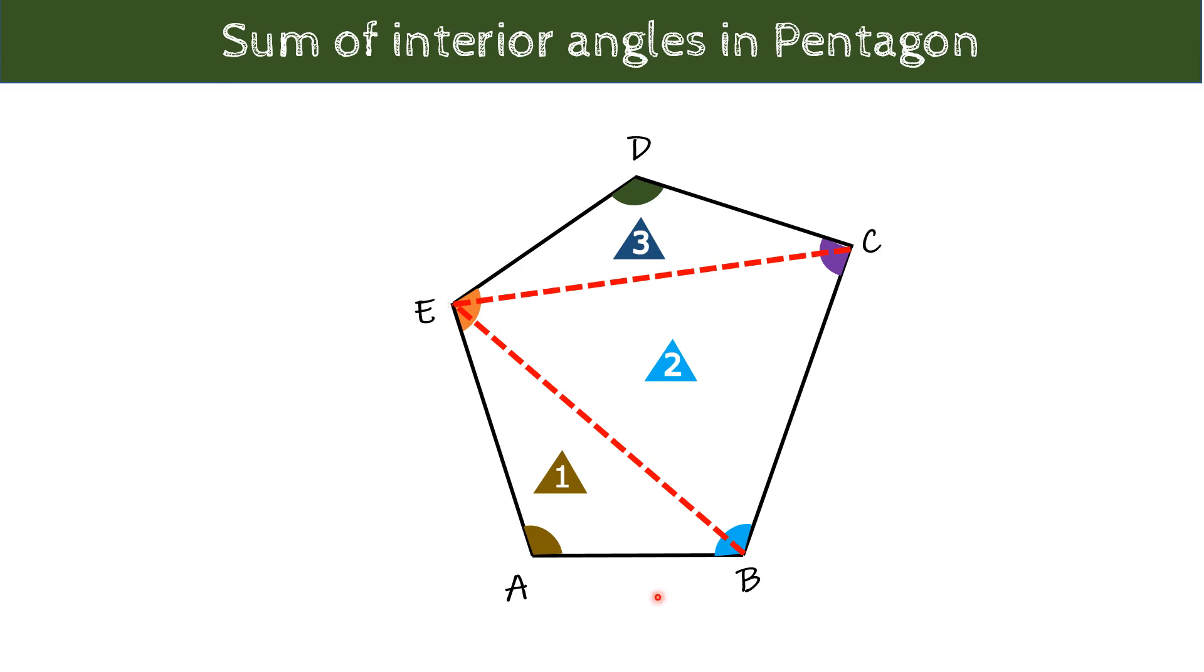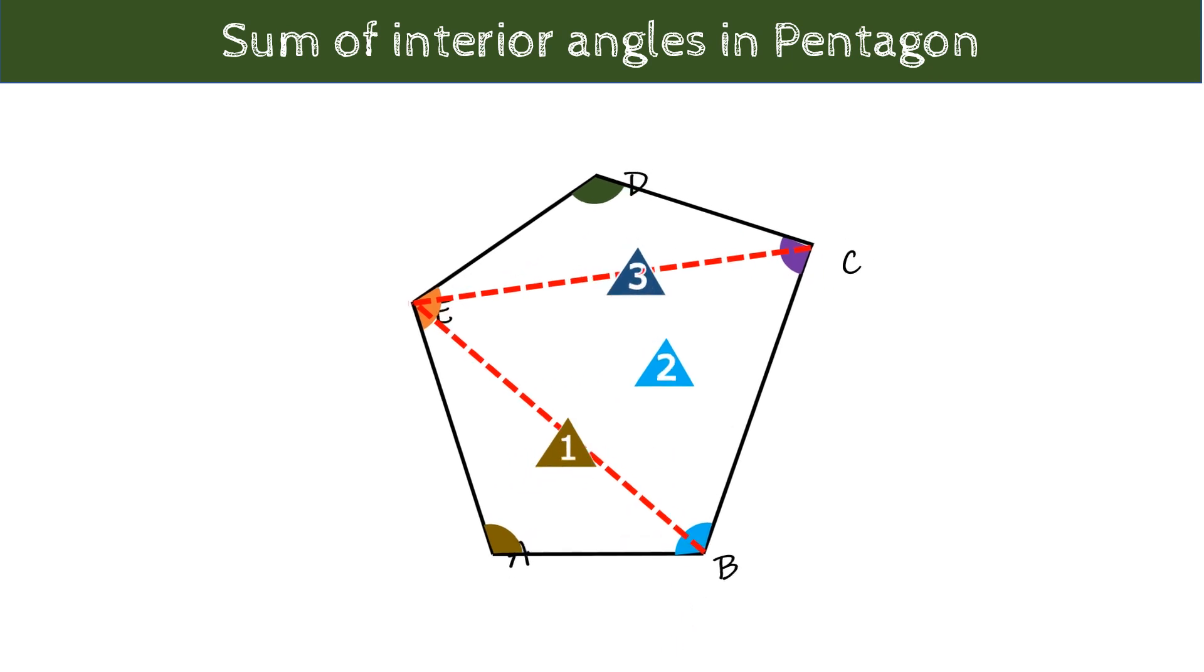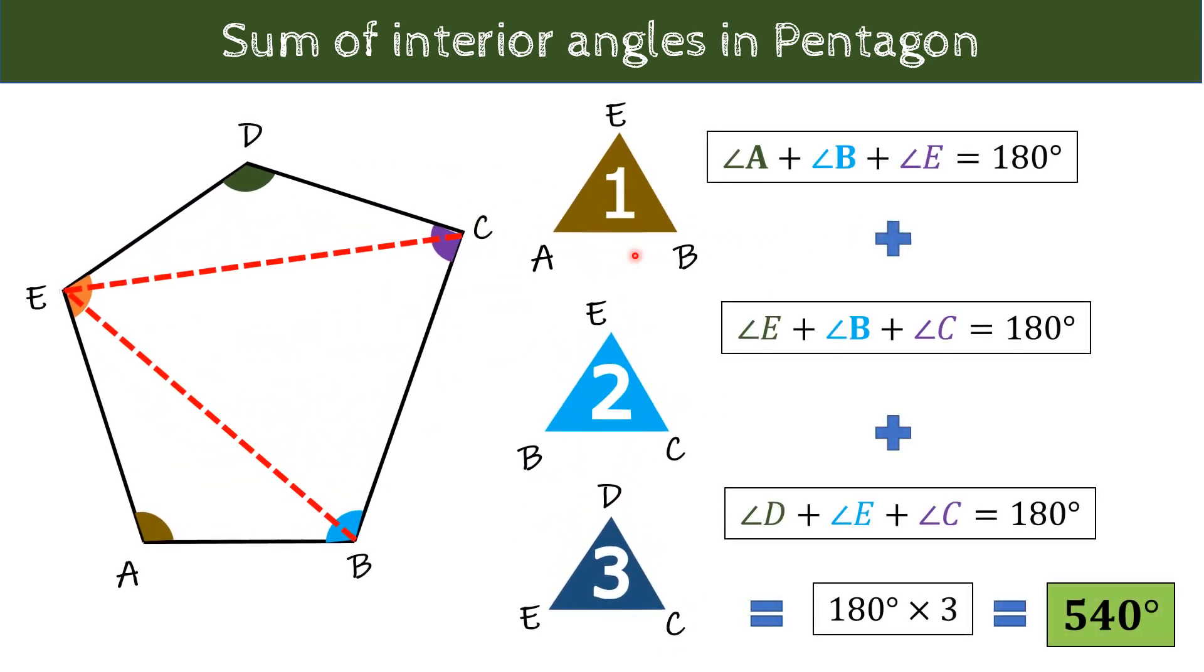We have divided it into three triangles. If the sum of interior angles of triangle is 180 degree, we have three triangles over here. Hence, total sum of interior angles of pentagon will be 180 degrees from the first triangle plus 180 degrees from second and 180 degrees from third triangle which is equal to 180 degrees times 3 equal to 540 degrees. I think you might have get the idea how to solve it for higher number of sides.